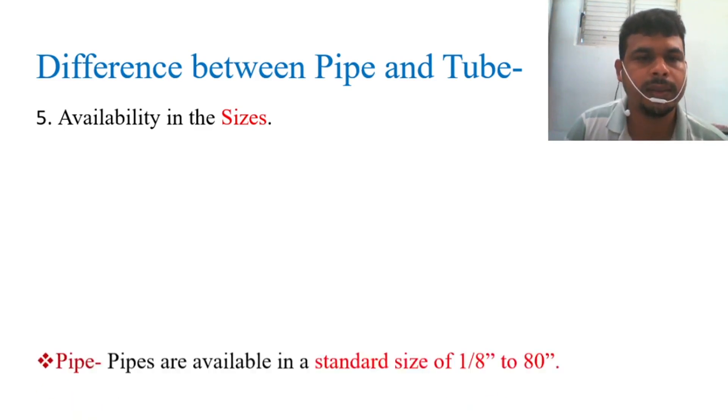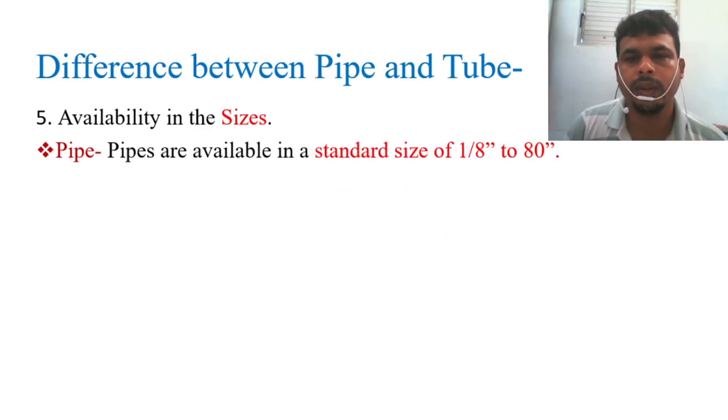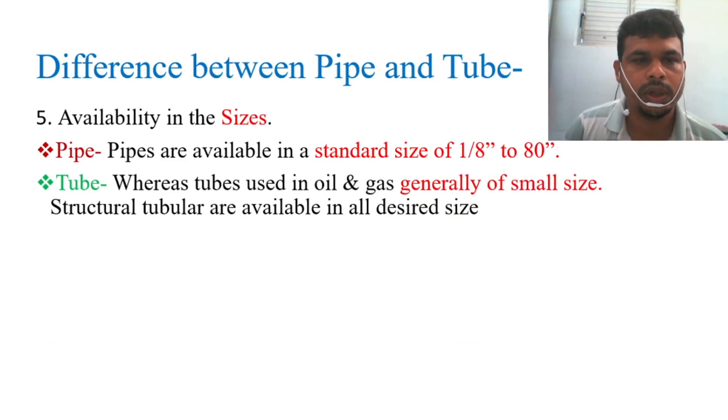Availability in sizes: pipe is available in standard sizes of 1/8 inch to 80 inches. This is the standard size you can get in the market. More than this also you can get. Whereas tube used in oil and gas is generally of small size. Tube normally is very small diameter. Then application of pipe and tube I will try to discuss in another lecture. Structure tubular is available in desired sizes.